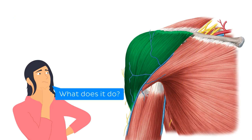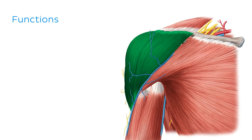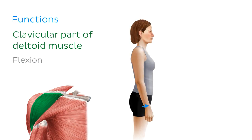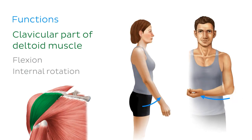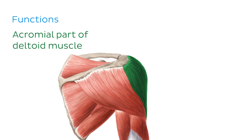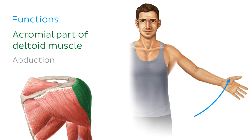So what does the deltoid muscle do? Well, it's actually responsible for several movements of the shoulder joint. Each part of the deltoid performs a different function. Let's start with the clavicular part — these muscle fibres assist in flexion and internal rotation of the arm at the shoulder joint. Next, we have the acromial part of the deltoid muscle, which we can see better from a posterior perspective. These muscle fibres perform abduction of the arm at the shoulder joint.